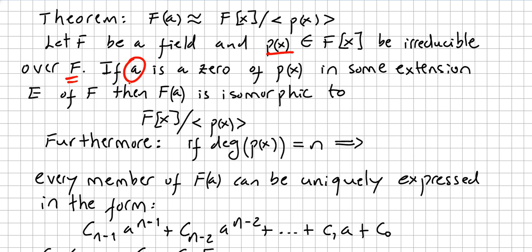If A is a zero of P(x) in some extension E of F, then F(A) is isomorphic to this division ring of polynomials.